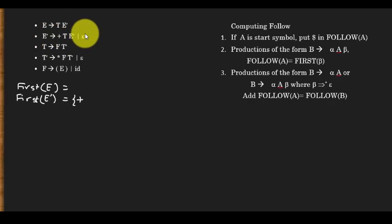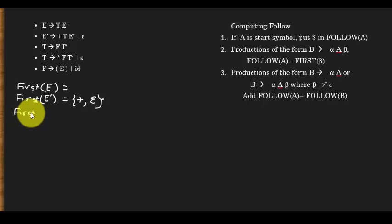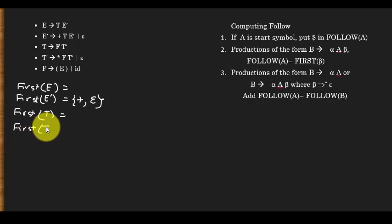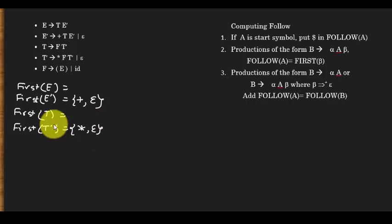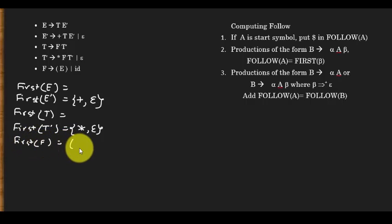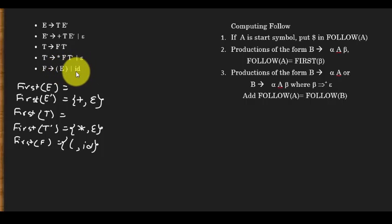E' also has epsilon as a production, so epsilon is another element of first of E'. For T', the first set is {star, epsilon}. For F, the leftmost symbol is an opening parenthesis in one production, so opening parenthesis is in first of F. The other production is just ID, so ID is also in first of F.